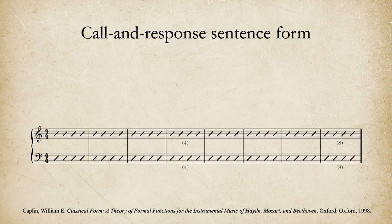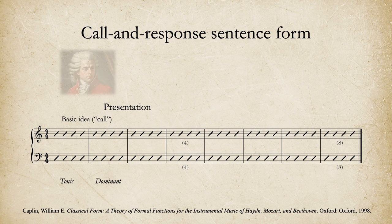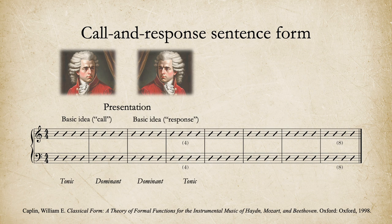Before we develop a specific basic idea, let's quickly review what a sentence phrase is in the classical style. We start with a presentation phase, where you hear a basic idea and a repetition of that basic idea — the repetition could be exact or sequenced. What I recommend is a version called a call and response presentation, where the basic idea is repeated but the roles of dominant and tonic are switched. We follow this with a continuation phase, where ideas get shorter and then there's motion to a cadence.